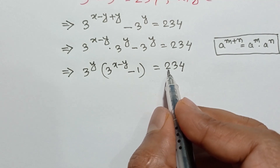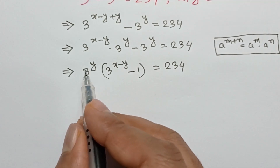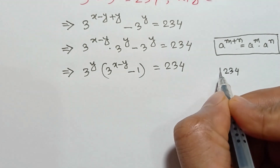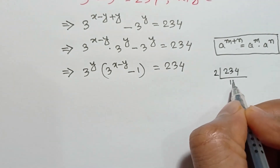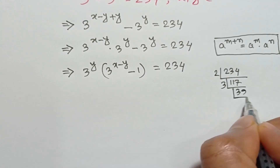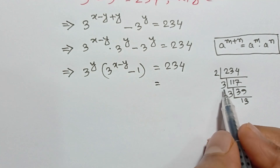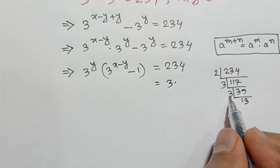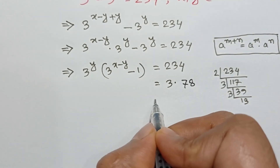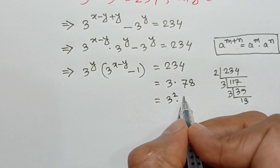Now, try to write 234 as a product of two numbers such that one of them is a multiple of 3. So, 234 divided by 2 is 117, divided by 3 is 39, divided by 3 is 13. So 234 equals 3 times 3 times 2 times 13, which equals 3 squared times 26.